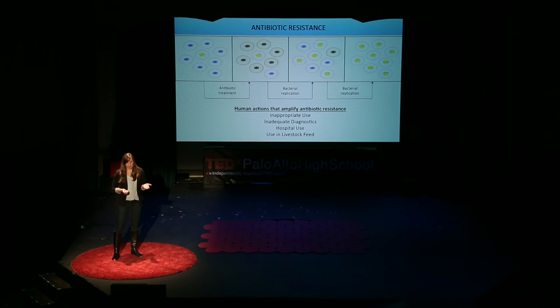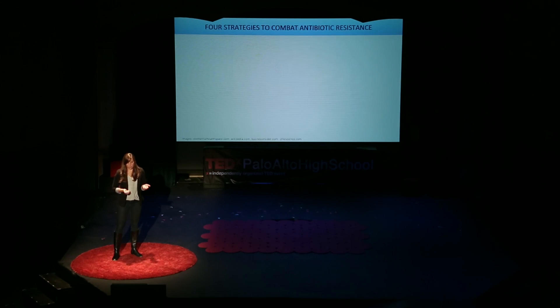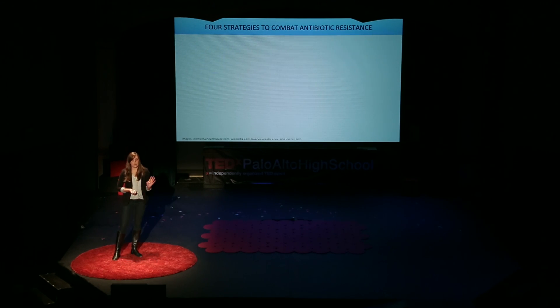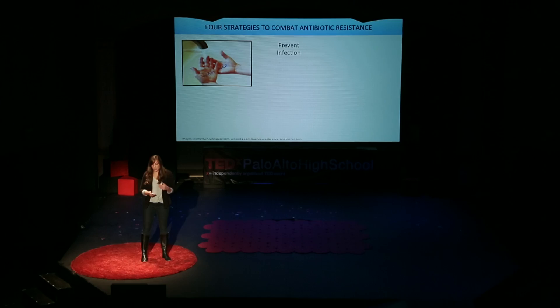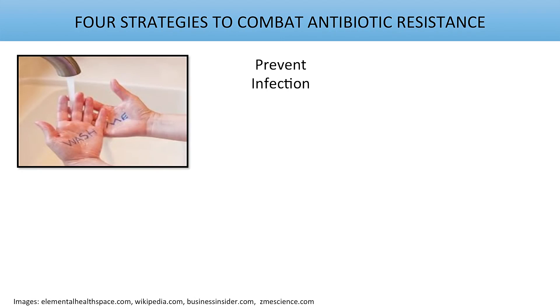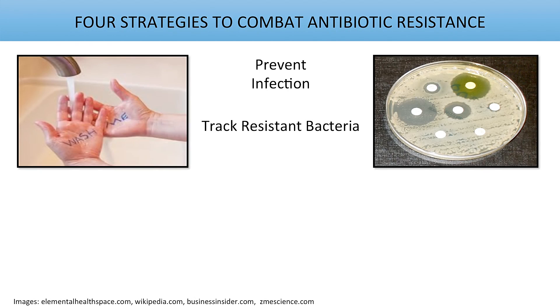So what can we do about this problem? The Center for Disease Control has identified a four-strategy approach. The first is just preventing infection in the first place — we can prevent infection, we won't have to use antibiotics, and that's going to slow the emergence of resistance. The second strategy is to track resistant bacteria.